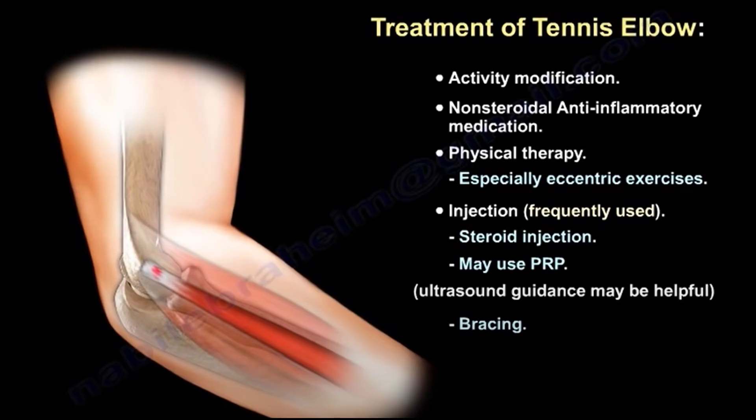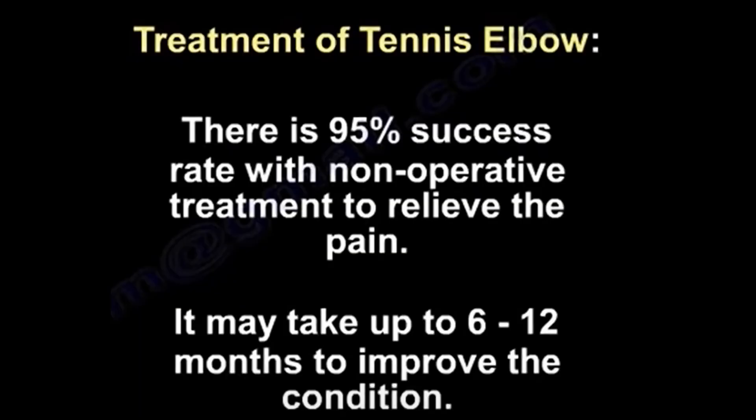You may use a steroid injection up to 3 times, or a PRP injection. The injection can be performed blindly or under ultrasound guidance. There is a 95% success rate with non-operative treatment to relieve pain in tennis elbow, though it may take up to 6 to 12 months to improve the condition.